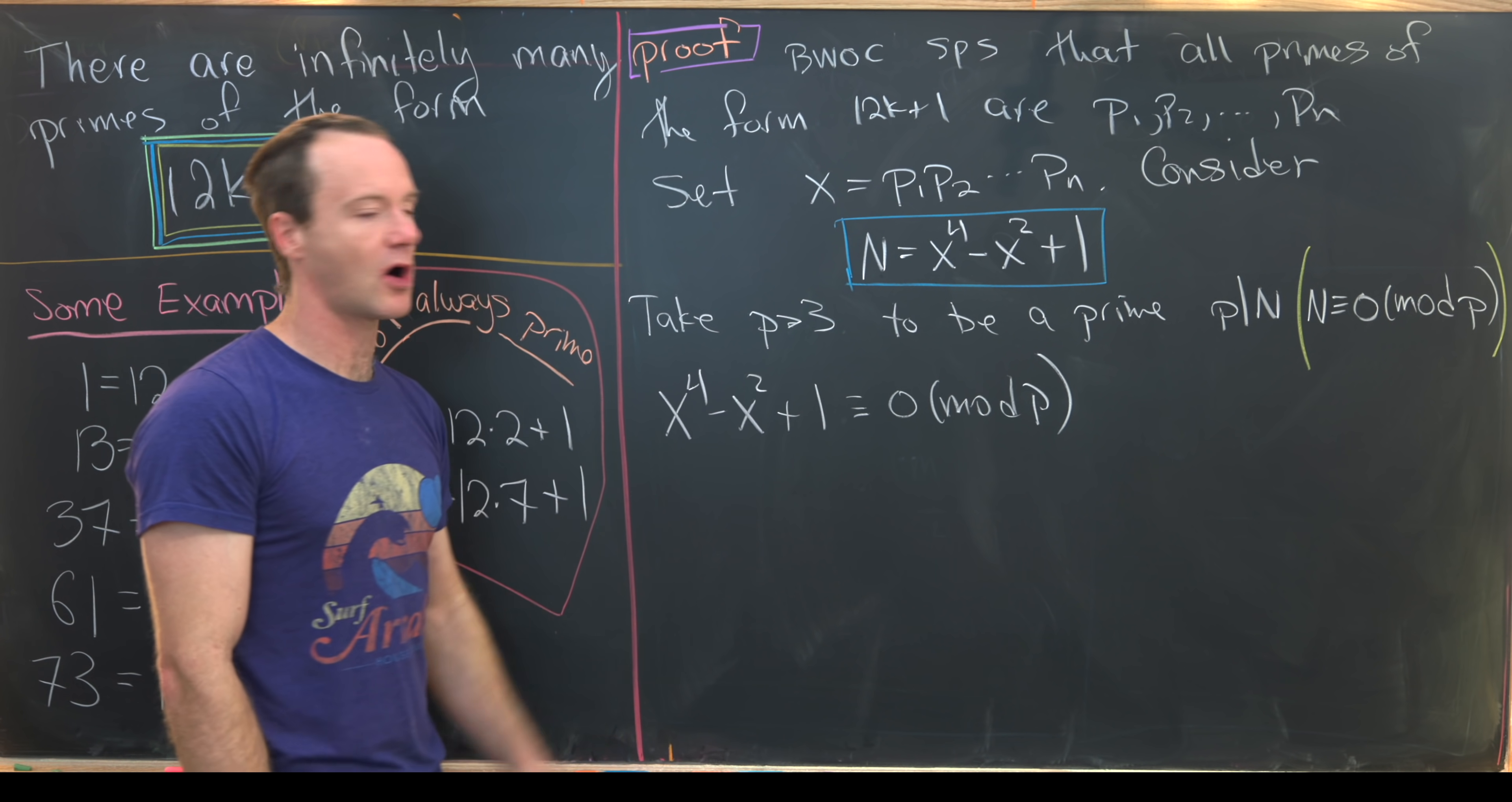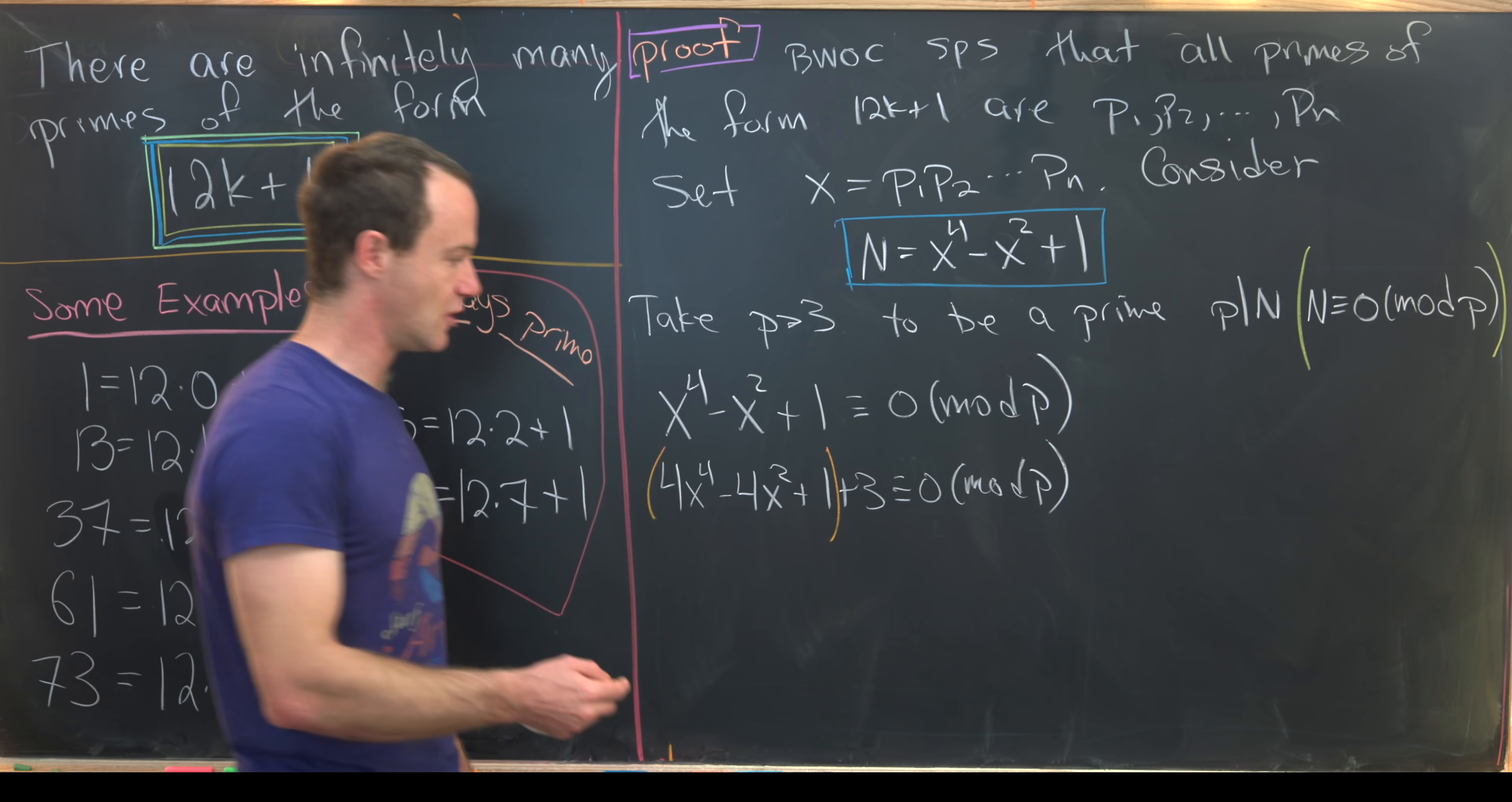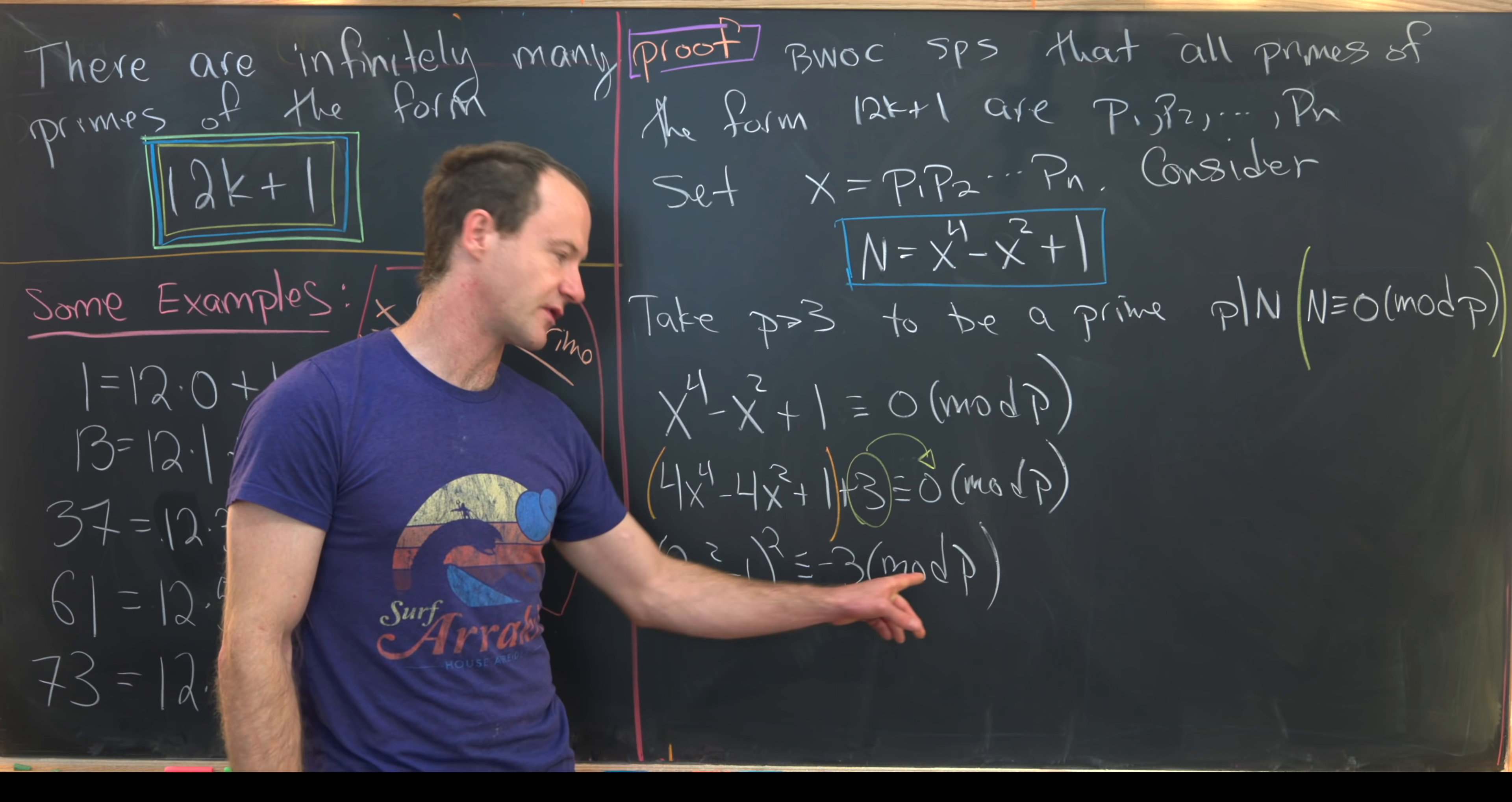So we'll start by completing the square with parts of this object. So we can do that by first multiplying this whole thing by 4. That'll give us 4x to the fourth minus 4x squared plus 1 plus 3 congruent to 0 mod p. So I've split the plus 4 into plus 1 plus 3. And that's because now I can take this stuff which is in orange and write it as a perfect square binomial. And then I can take this 3 and move it over to the other side of the congruence. So that's going to give us 2x squared minus 1 squared congruent to negative 3 modulo p.